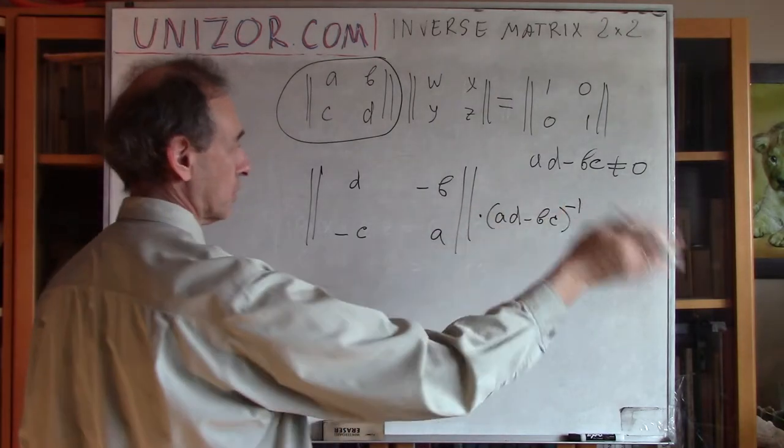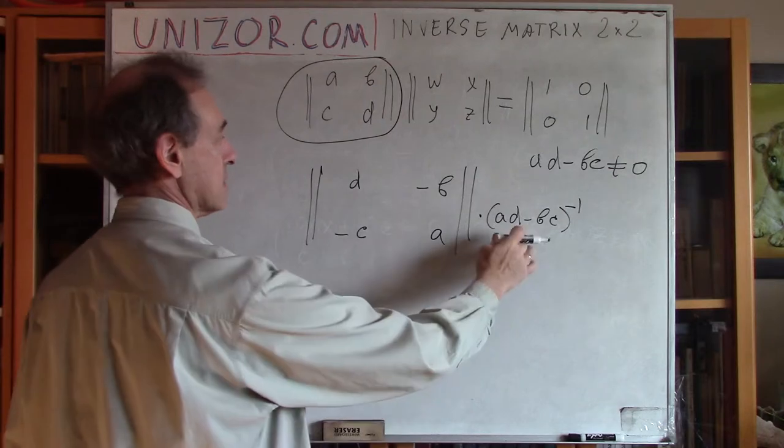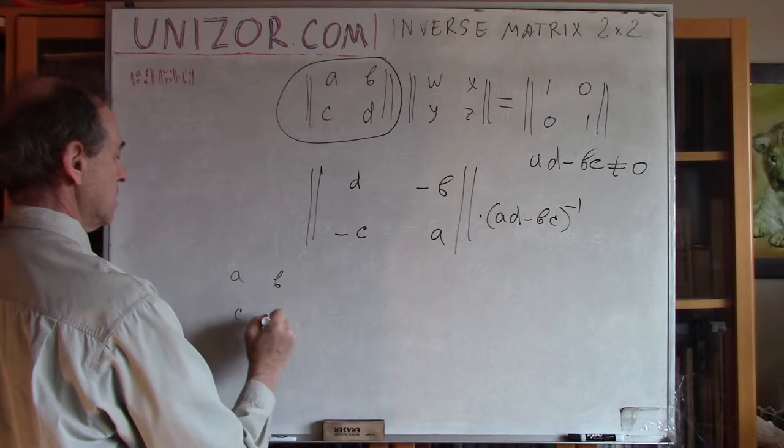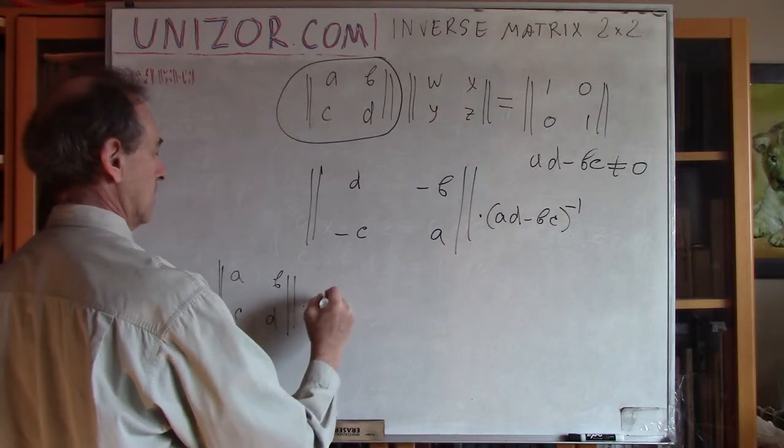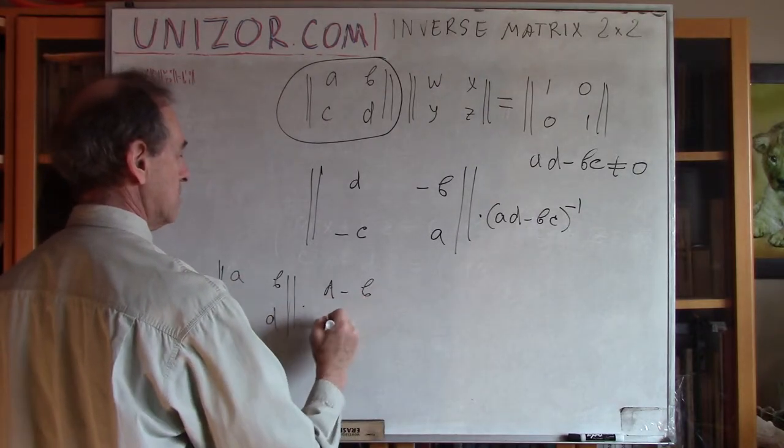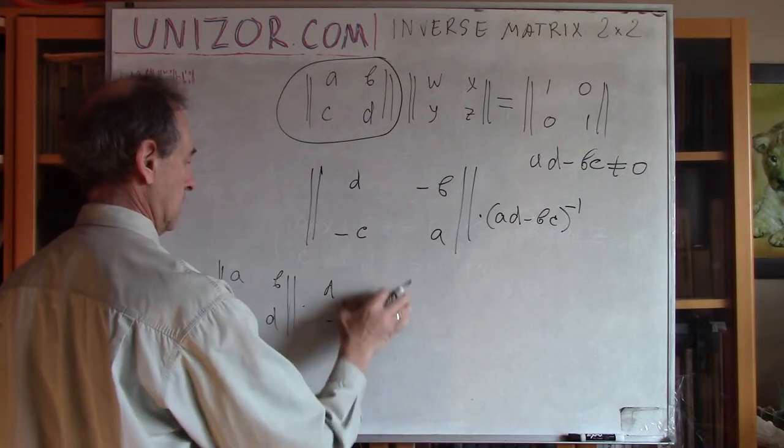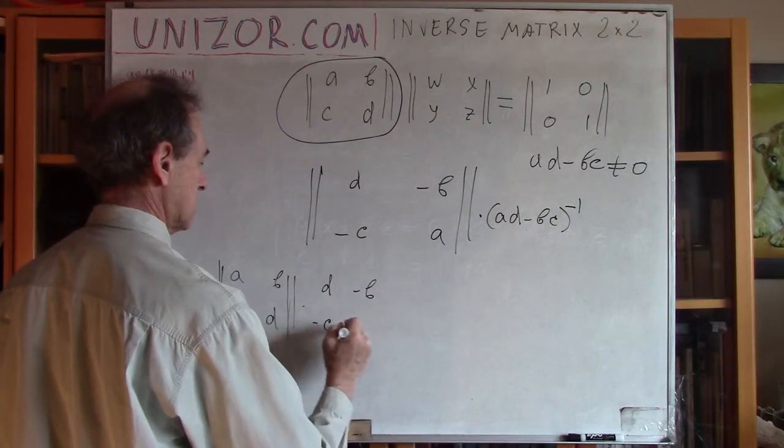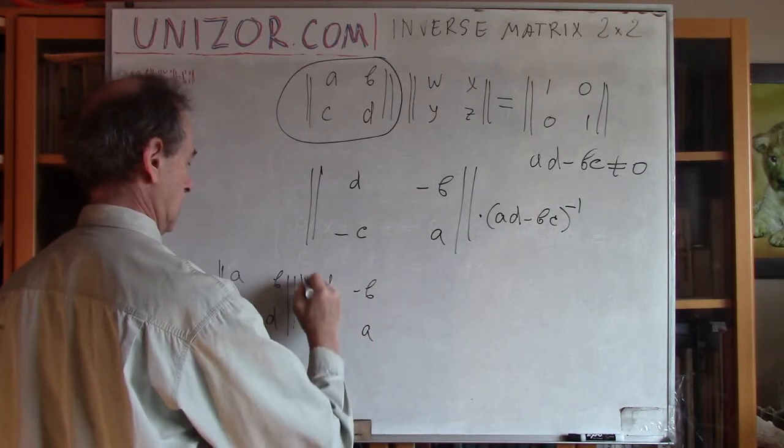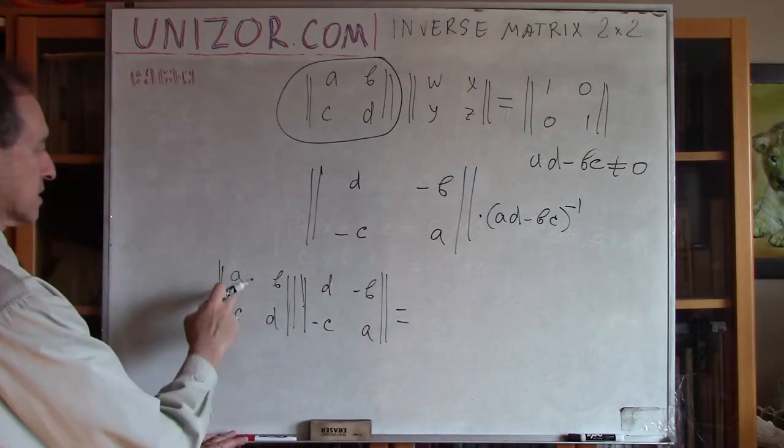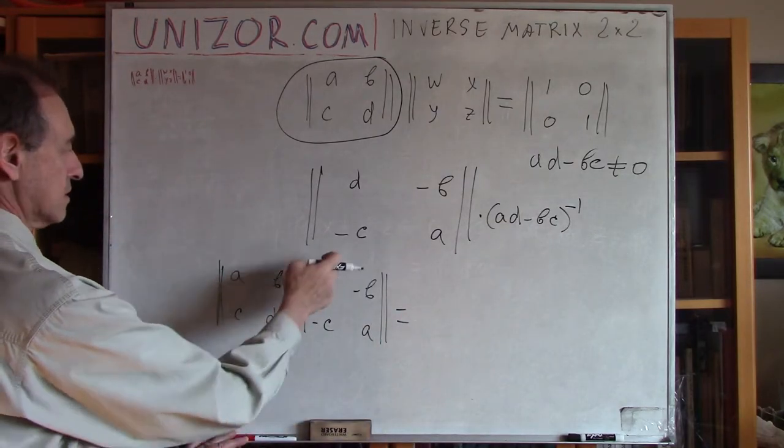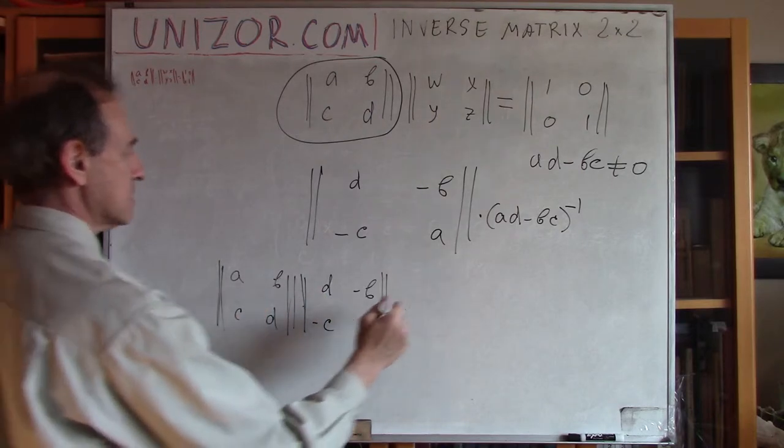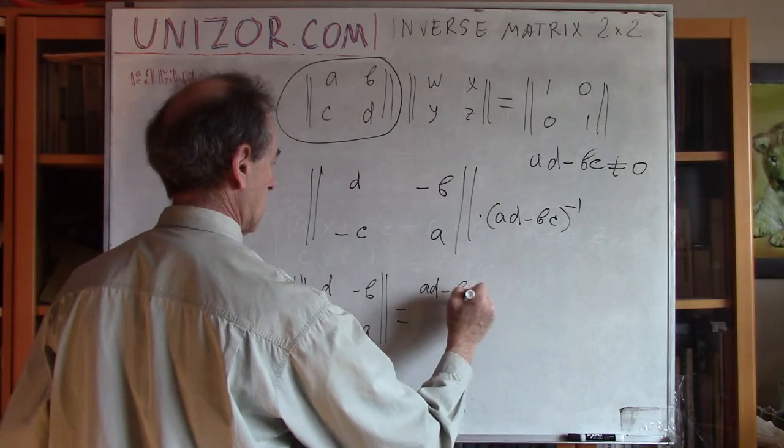Let's forget about this for a while. We will multiply the result by this factor afterwards. But, right now, we will multiply A, B, C, D by D minus B minus C, A. D minus B minus C, A. Okay. Let's multiply. First row by first column. A, D minus B, C. Okay.